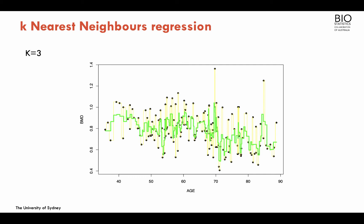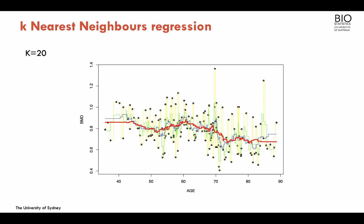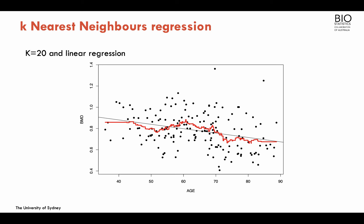With one neighbor we overfit. With K=3 neighbors the line starts becoming a little more smooth. With nine neighbors it smooths further, and with twenty neighbors you can see that it starts really approximating the linear regression line. So linear regression was not that bad of a model for the relationship between age and BMD.